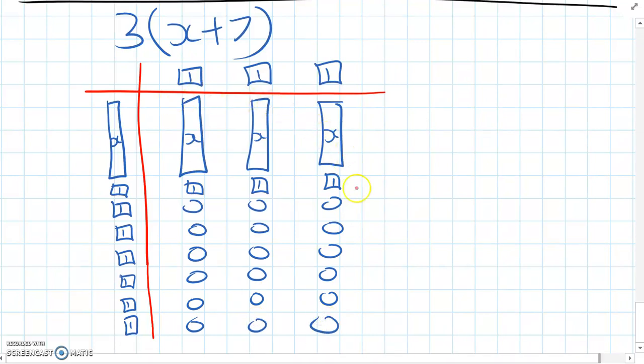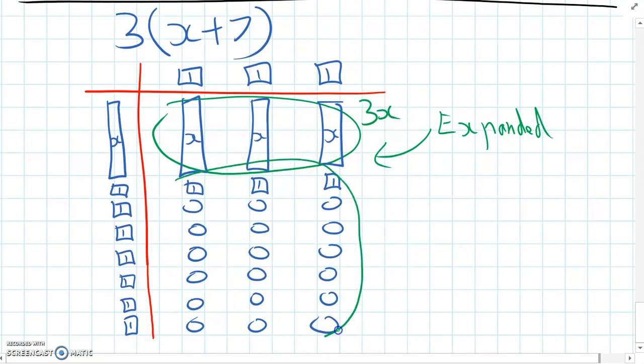Now we've filled out our expanded form in the middle, and now we need to group all the like terms together. We can see the x's, we have three of those, so we have 3x. Then we have three, or we have seven rows of three, so seven times three is 21, positive 21. The expanded form for that is 3x plus 21.